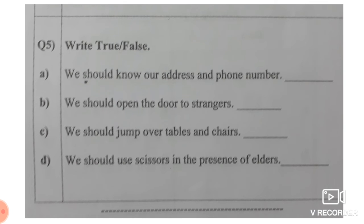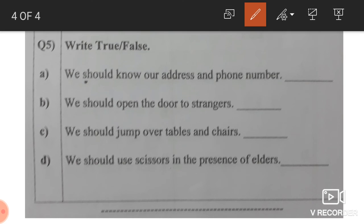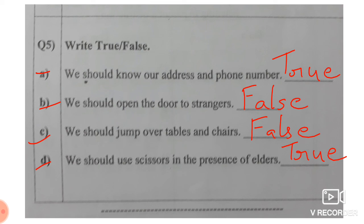Next, question number five. Write true and false. Number one, we should know our address and phone number. Yes, it's correct. True. We should open the door to strangers. No, false. Never do that. We should use scissors in the presence of the elders. Yes, if it is very necessary, you are doing some activity. Yes. Please follow the safety rule and be safe. Thank you, God bless you.